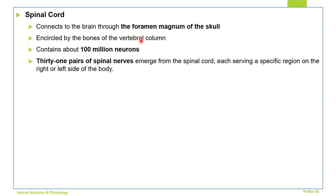Since these are such important organs of the body, they need to be protected. The spinal cord contains 100 million neurons. Just like the cranial nerves, the spinal cord is also responsible for producing 31 pairs of spinal nerves which emerge from the spinal cord, each serving a specific region on either the right or the left side of the body.